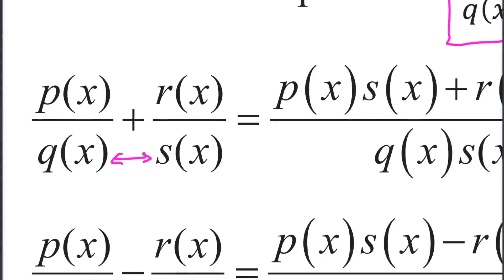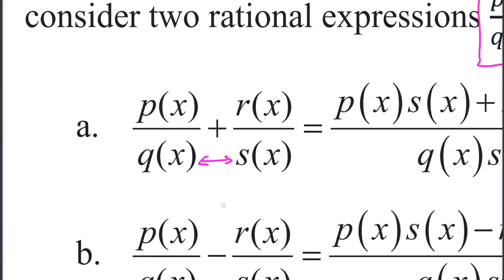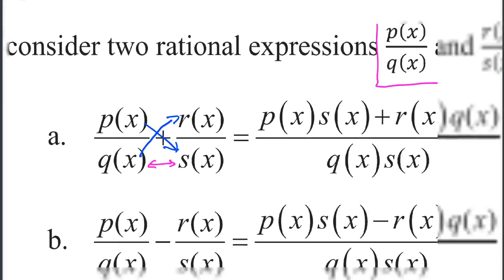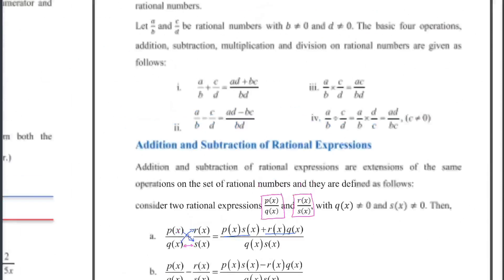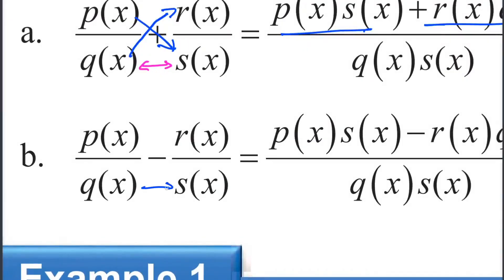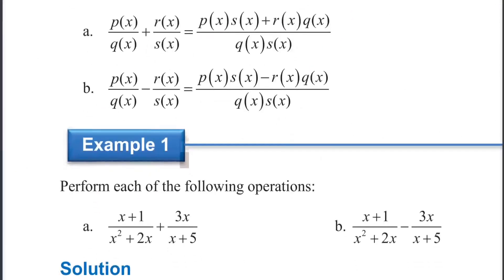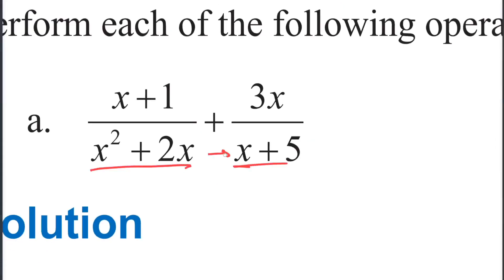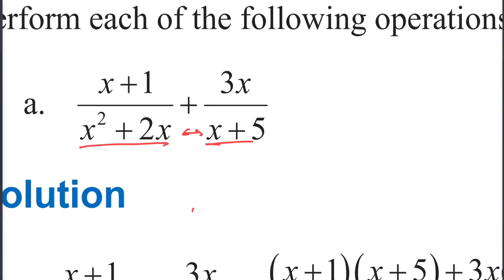When Q of x and S of x are the same — that is, when we have the same denominator — we work with the denominator. The denominator here is x squared plus 2x, times x plus 5.